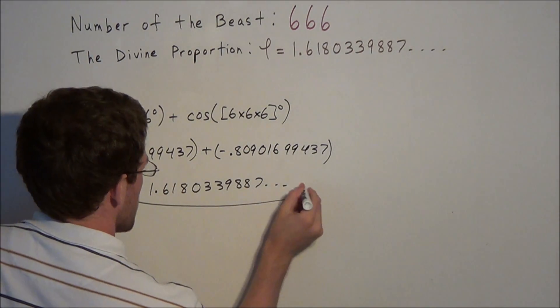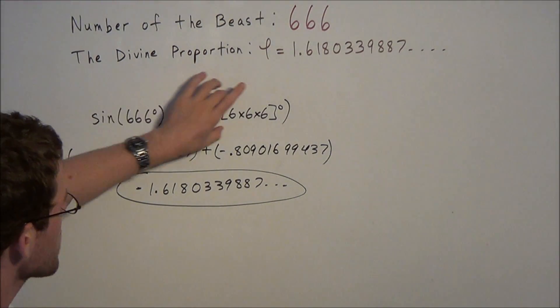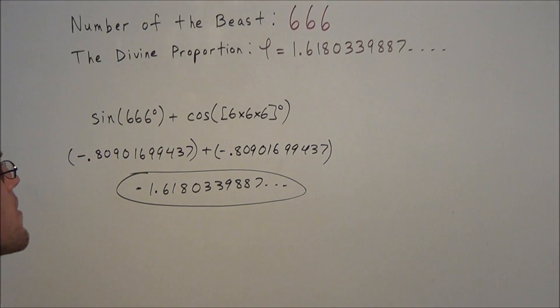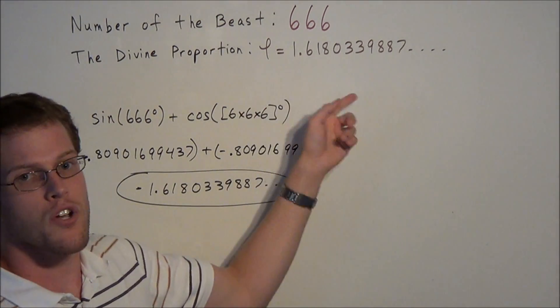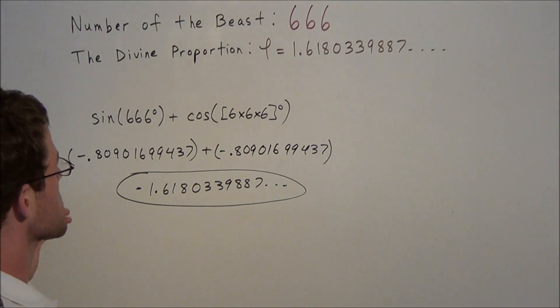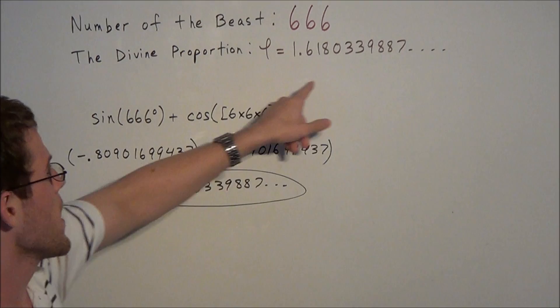So if we analyze this a little bit closer, this tells us that an expression here that uses the number of the beast results in the additive inverse of the golden ratio. So that tells us that the number of the beast, in some sense, is the inverse of the holiest number that exists in mathematics.